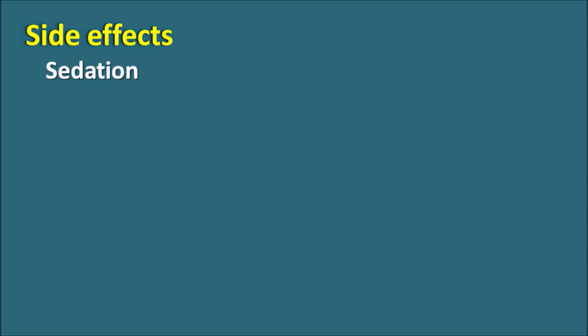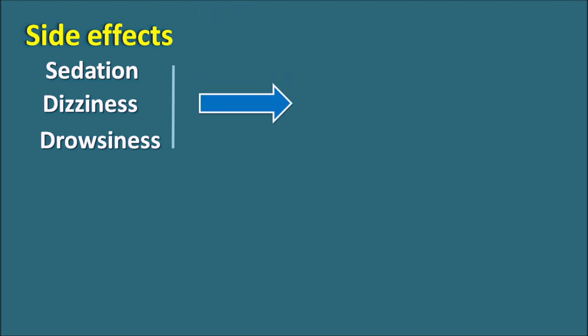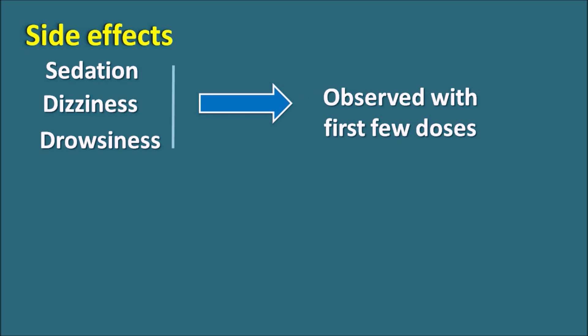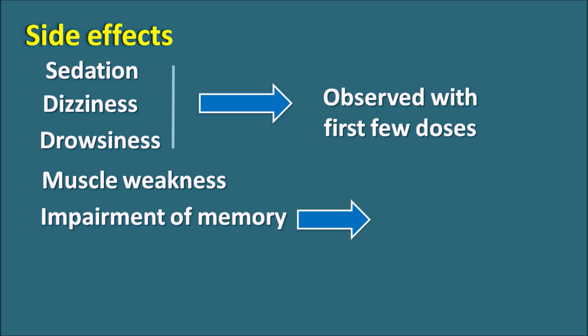What are the side effects? Since Alprazolam acts on GABA-A receptors producing sedation, the side effects are related to these central actions: sedation, dizziness, and drowsiness — these central side effects are mainly observed with the first few doses and can be somewhat minimized after a few doses. Alprazolam can also produce muscle weakness due to muscle relaxation, and impairment of memory. It can produce transient retrograde amnesia — temporary loss of memory that is restored when the drug is stopped. This is especially important in elderly patients.